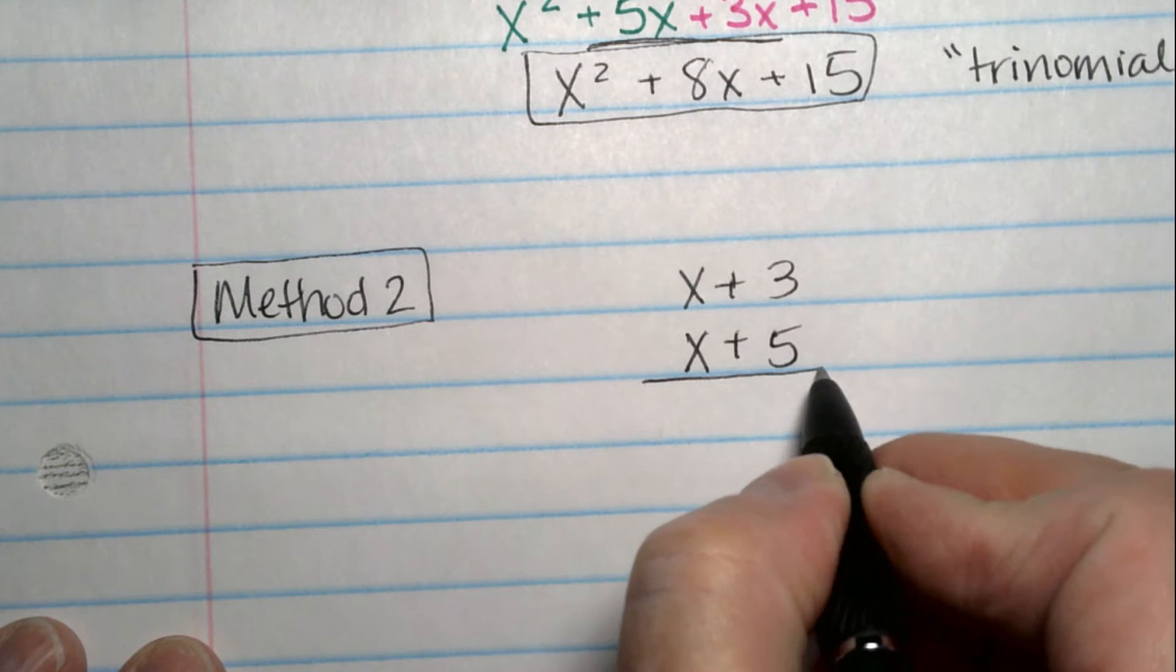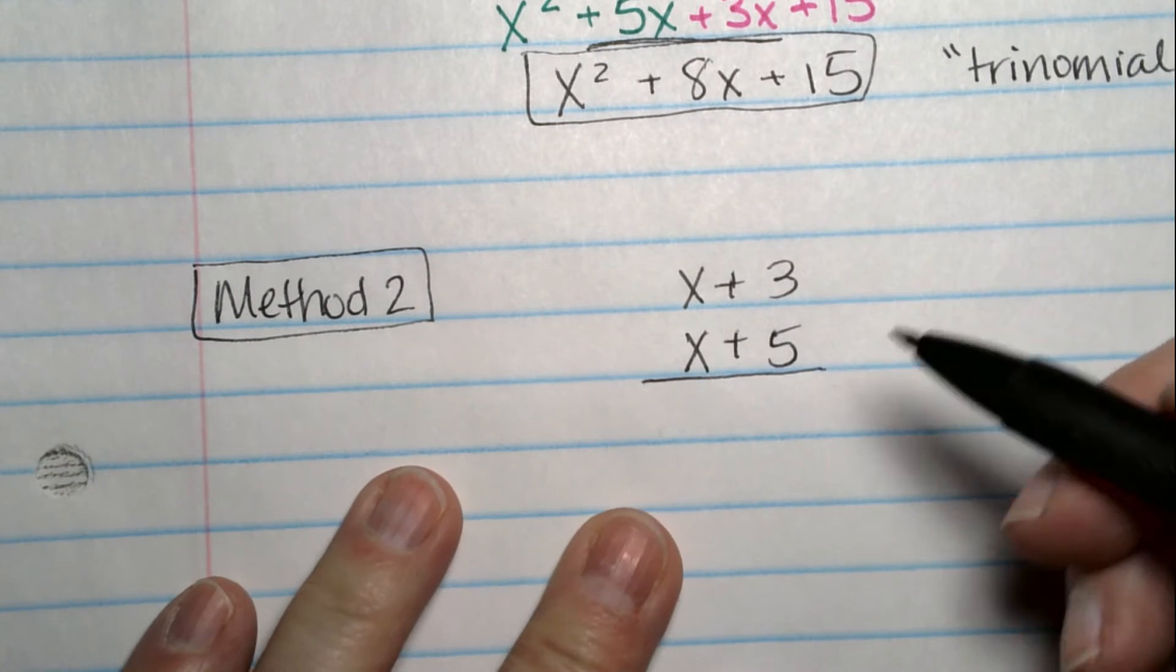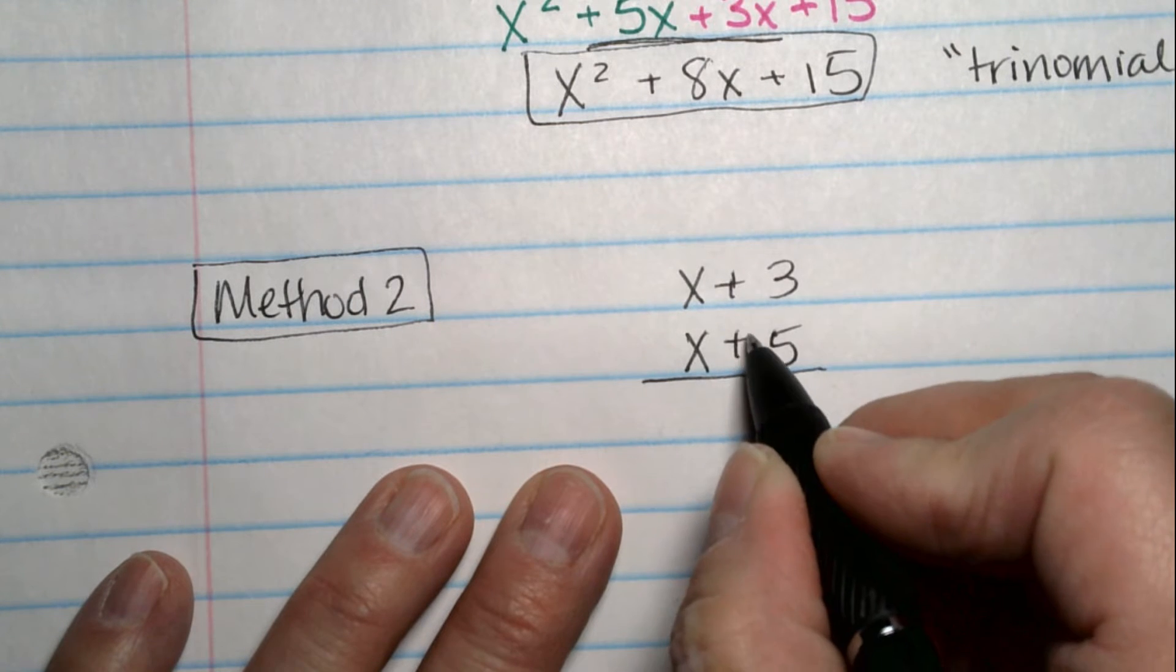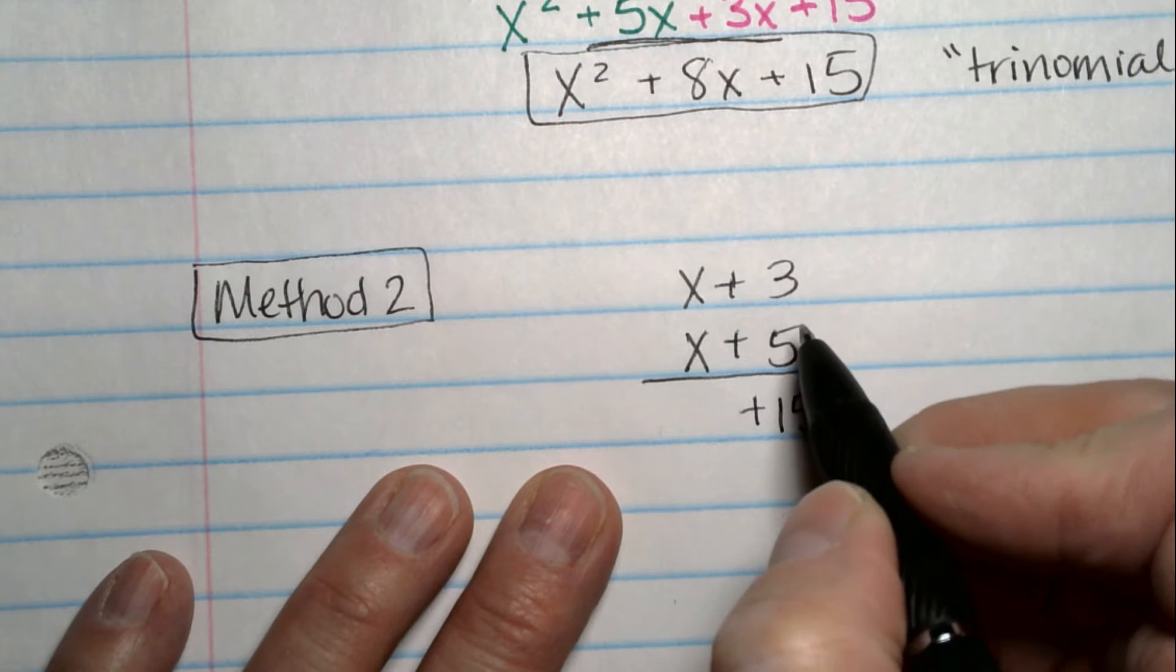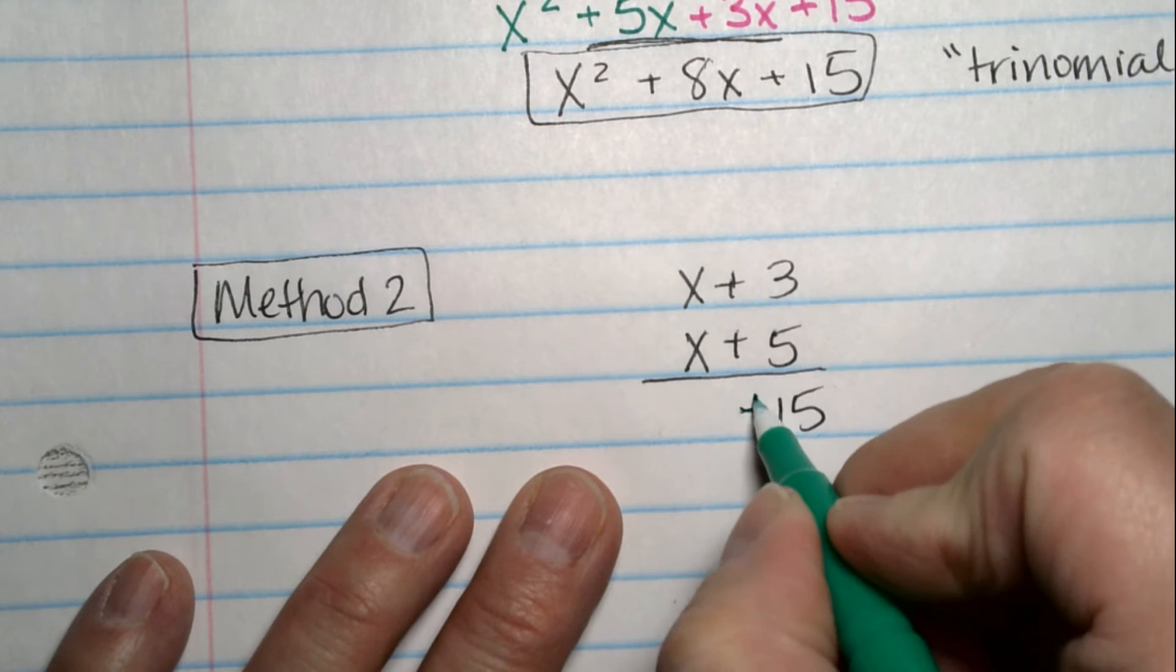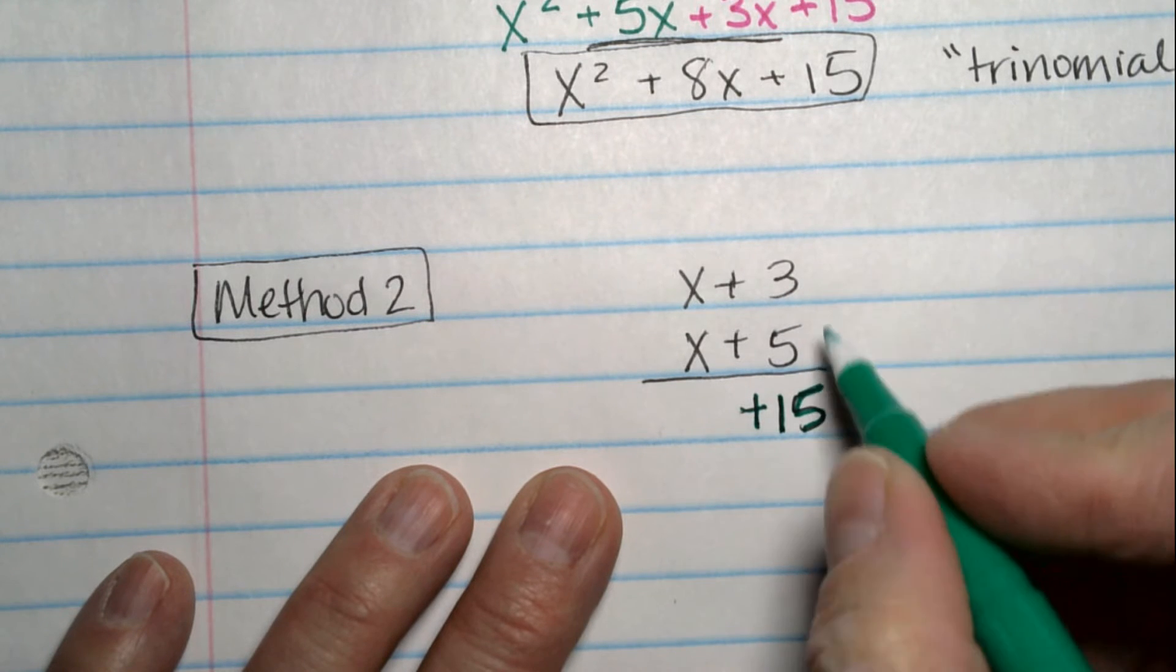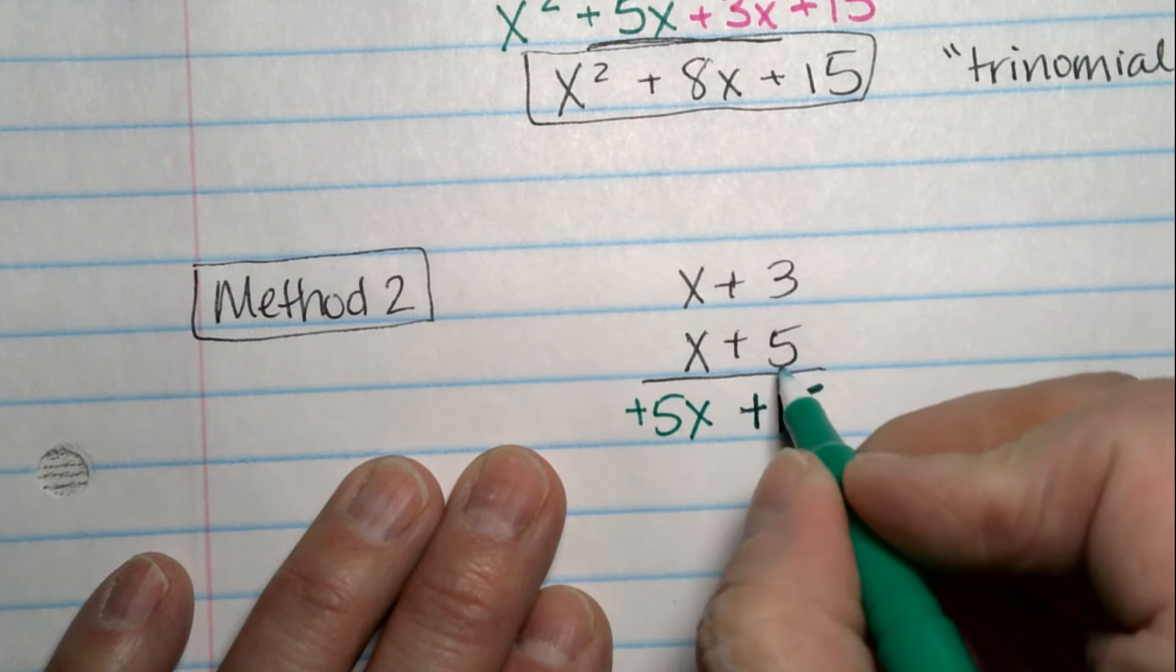And I would just go through all the same movements for multiplying that we learned when we were in elementary school. I start with the 5 times the 3. Those are both positive. So that's a plus 15. I probably should use different colors for different movements. Okay. 5 times 3 plus 15. 5 times x is a positive 5x.